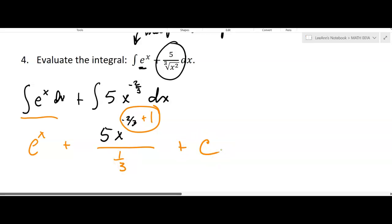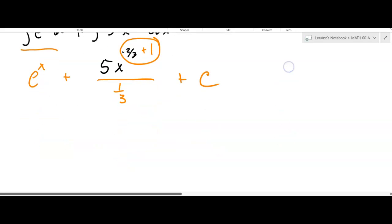All right, so now we just have to clean this up a little bit. It's gonna be e to the x plus, so invert and multiply, that's gonna give you 15 there, x to the 1/3 plus C. Now you could leave it that way.